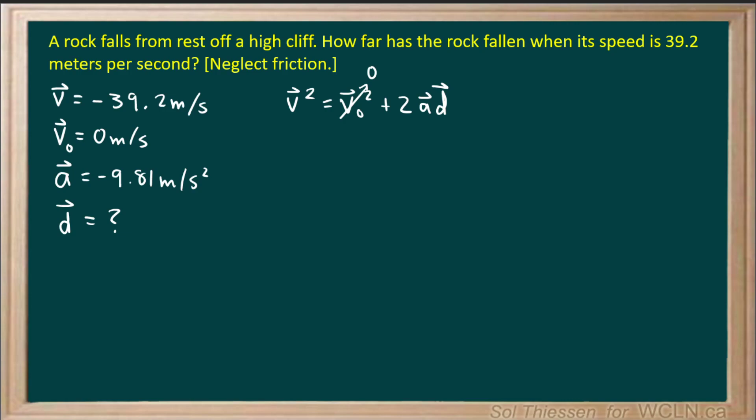So now we have final velocity squared equals two times acceleration times displacement, and we want to solve for displacement. So we're going to divide both sides by two times acceleration.